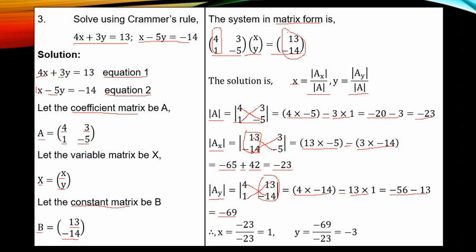After that, you get the value of S. The determinant of A sub S is minus 23, divided by the determinant of the coefficient matrix, also minus 23 — giving 1. Then to get Y: the determinant of A sub Y is minus 69, divided by the determinant of A, minus 23, giving 3. Therefore, the value of S is 1 and the value of Y is 3.